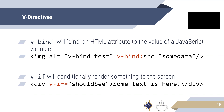VIf will conditionally render something to the screen. The VIf is pointing to a variable called 'should see'. If 'should see' is true, you'll see the text 'some text is here' printed. If 'should see' is false, then you won't see this at all — it will be invisible.